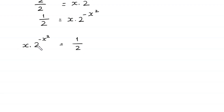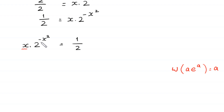Now we want to use the Lambert W function, where W of a times e to the power a is equal to a. To use the Lambert W function here, we must have the same expression in both places. For now, here we have negative x squared and here we have only x, so to make this x into x squared, we take the square of both sides of this equation.